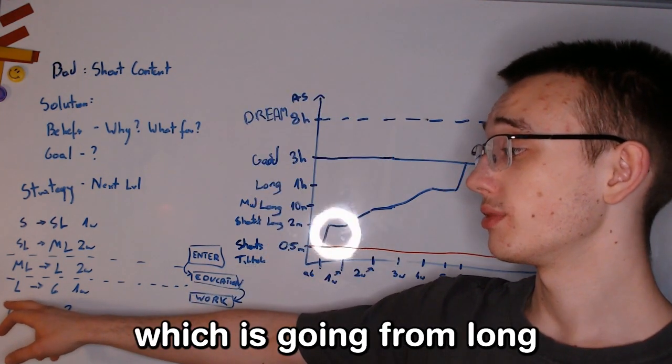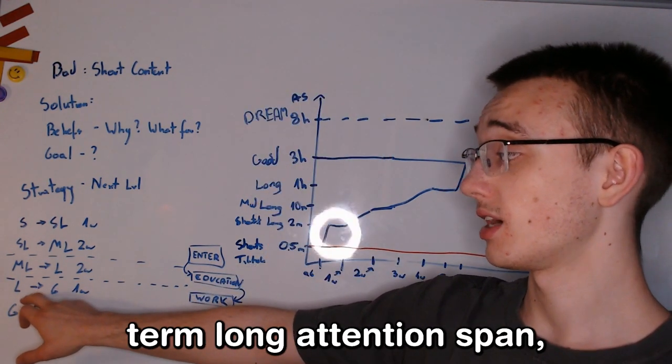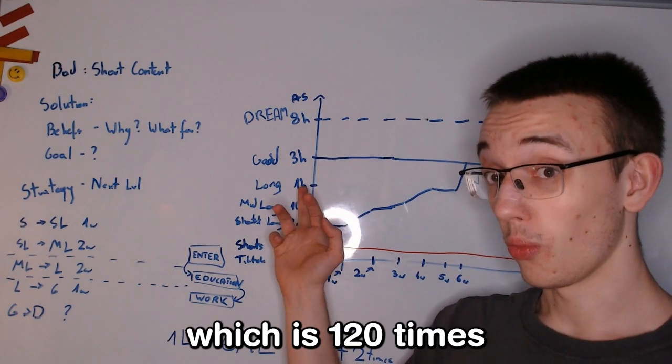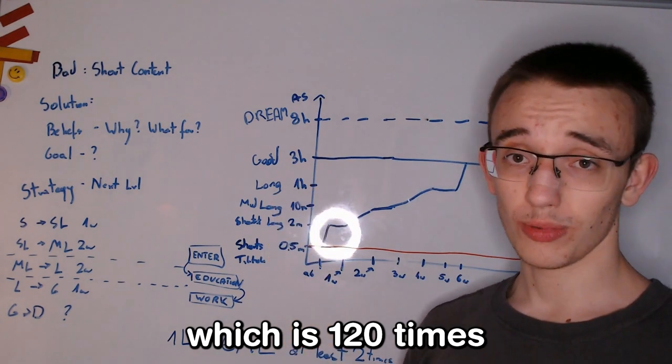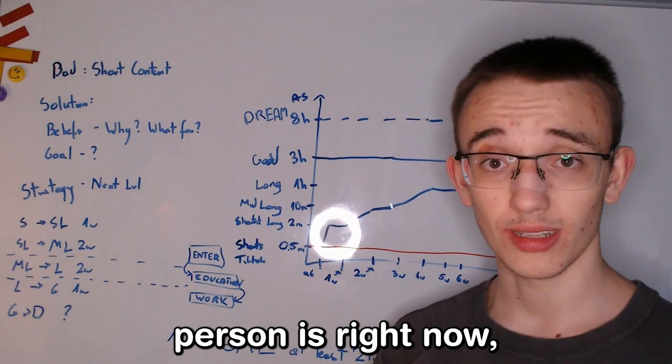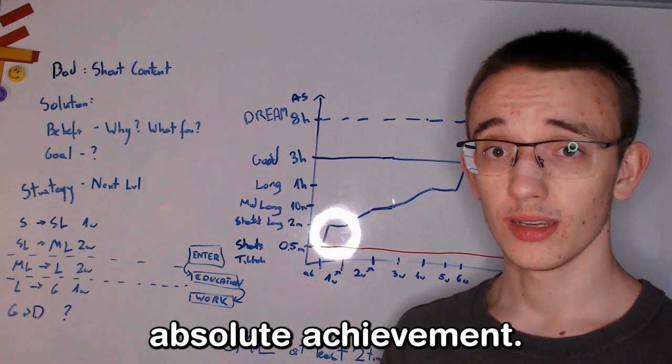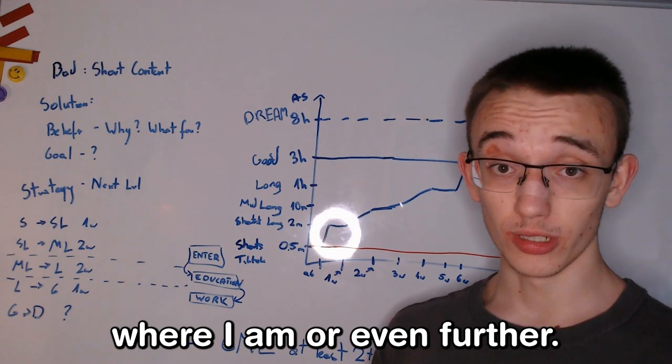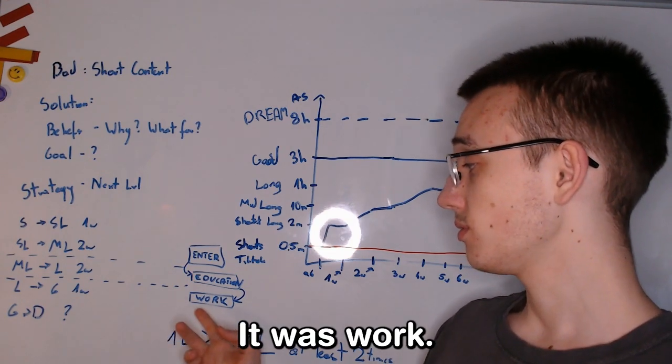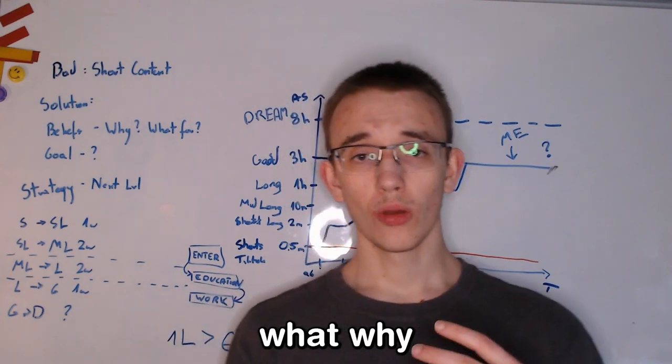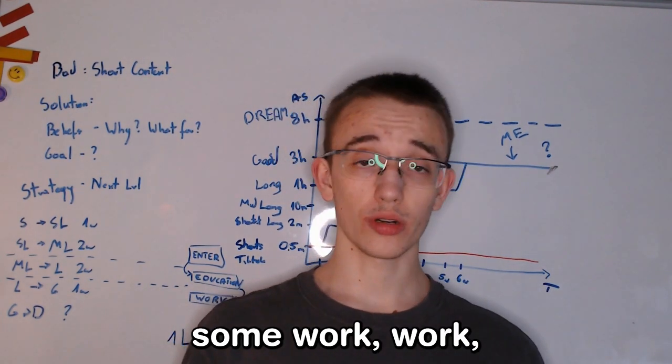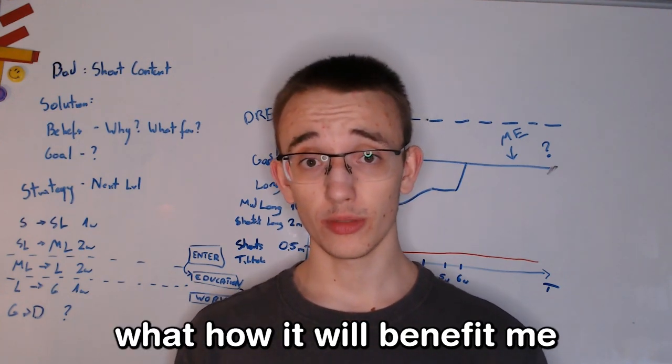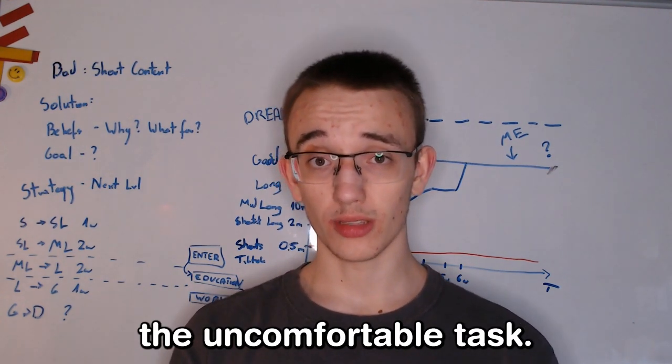So the next one, which is going from long attention span, which is an hour, which is 120 times what an average person is right now, which is an absolute achievement, but you want to triple it. You want to get to the level where I am or even further. It was work. It was simply figuring out why I need to do some work, what rewards I will get from it, how it will benefit me to do the work, to do the uncomfortable task.